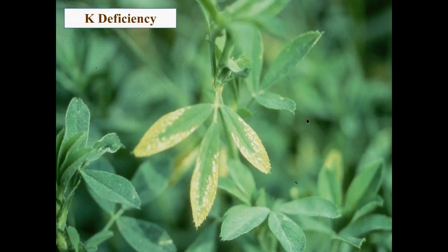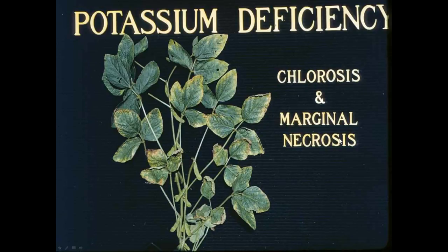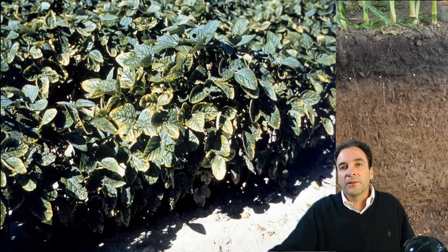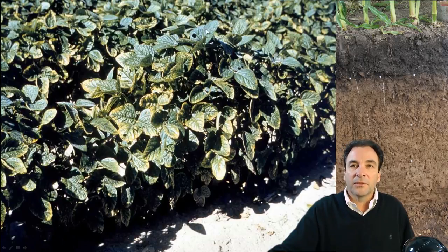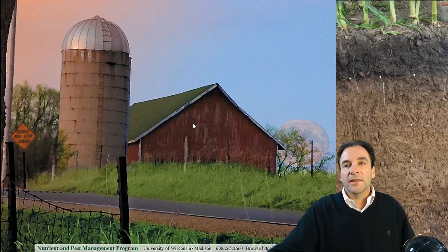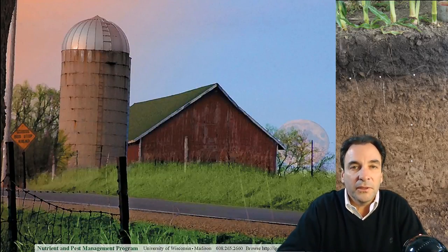Here's another shot of potassium deficiency in alfalfa. In soybeans, the same chlorosis — yellowing and browning of the older leaves first, starting at the tip and progressing down the margin of the soybean plant. This photograph shows potassium-deficient soybeans in the field, with chlorosis starting at the tip, going down the leaf margins, and the older or lower leaves being affected prior to the new leaves. With that, this wraps up the discussion of potassium in soils. Thank you very much for your time and attention.